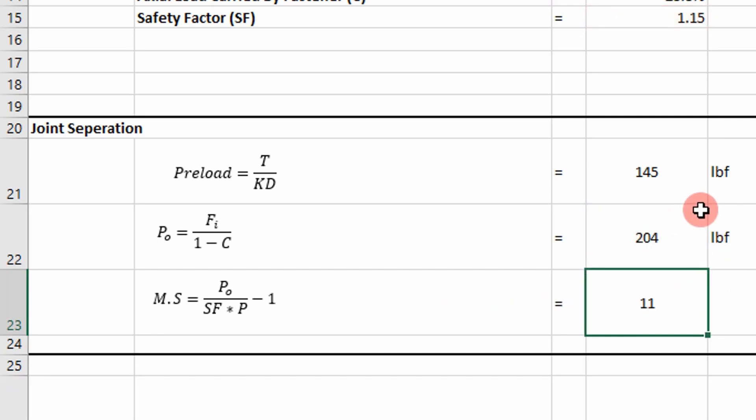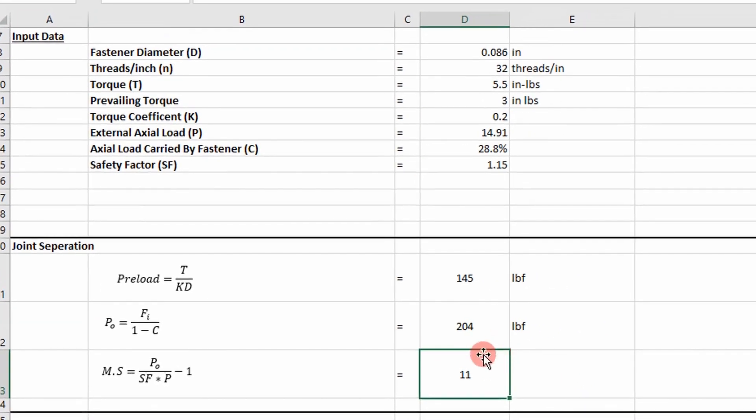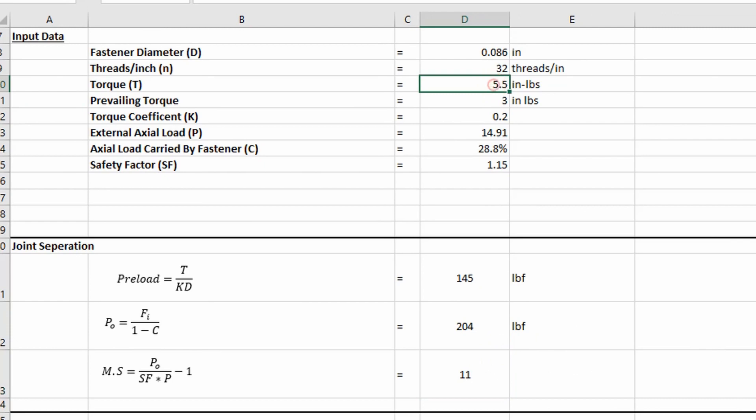And so next, one thing we do is we want to make sure this number is positive, but we also may want to drive down our torque sometimes. So we can just adjust our torque that we apply to the fastener and look at our margin of safety and see if what we did was going to keep us positive. So you can play what-if and go back to your designer and say, hey, this is the torque I need you to apply to the fasteners to keep the joint from separating.